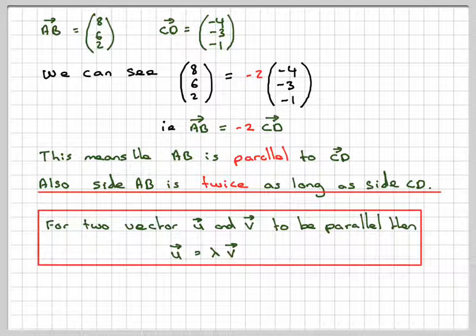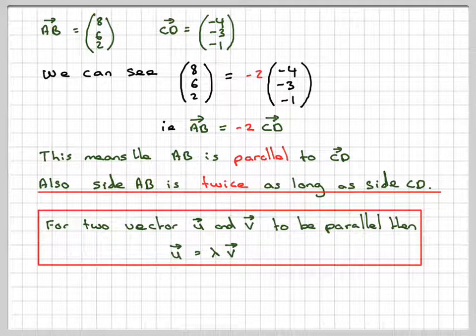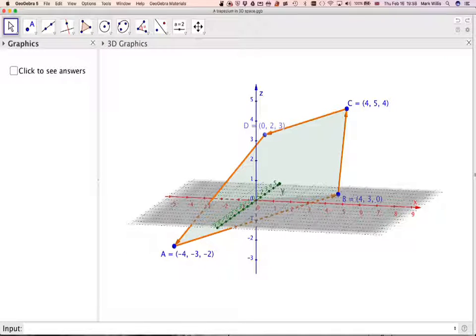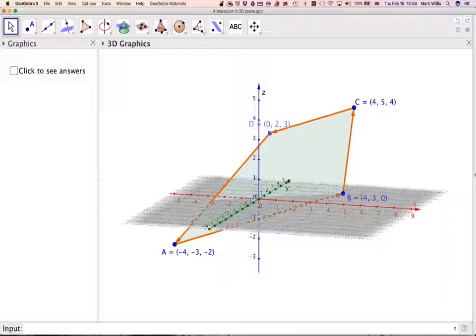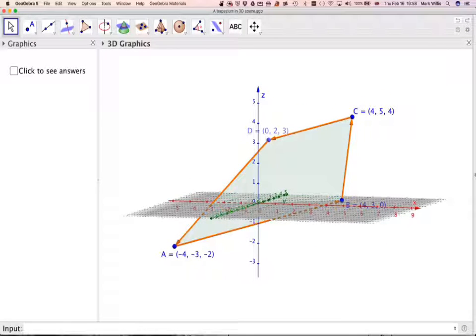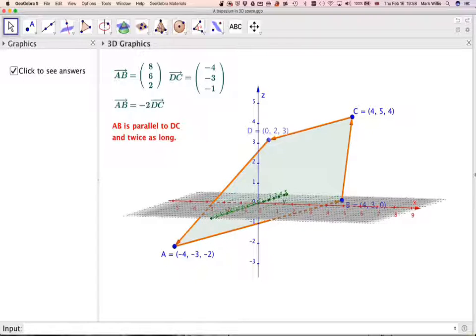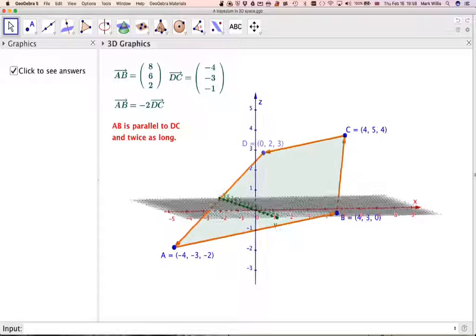Now, we can look at this in a GeoGebra applet. What we can see here, we can see our trapezium in three dimensions. We can move it around a little bit. You can have a look at it in different angles. But what we can definitely see, probably from the diagram, is that AB is parallel to CD. And in fact, this length here is half the length of this one here. That's what it means.